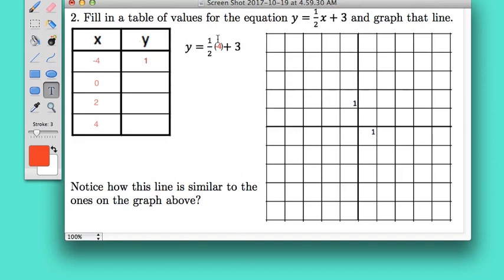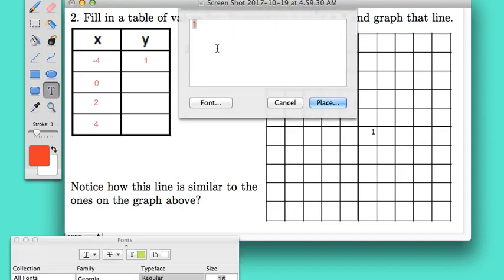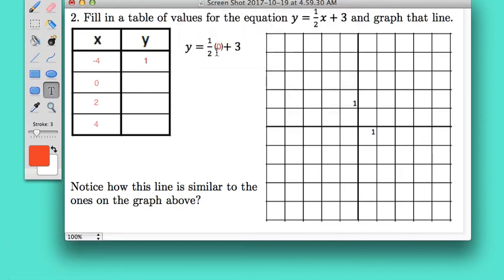Now let me try plugging in the next number in my table for x. I've got zero here, so let me plug in zero. It's great to use zero, it makes your life easier because one-half times zero—anything times zero is just zero. So then you have zero plus three, which gives you three. That means when x is zero, y is three, so I can put in three here.